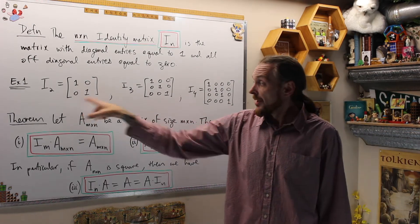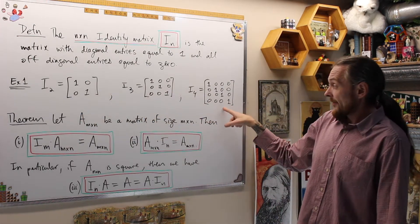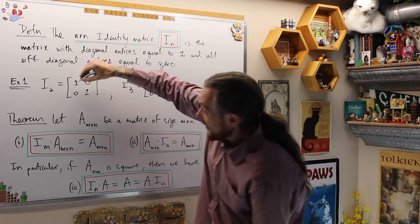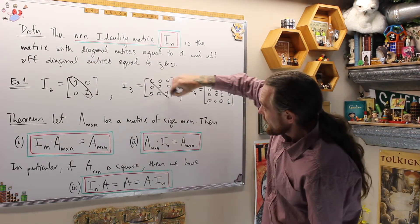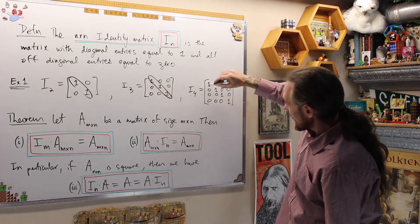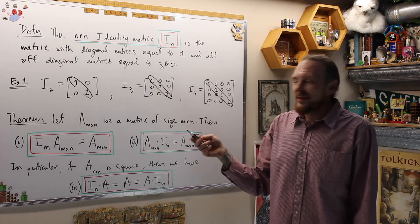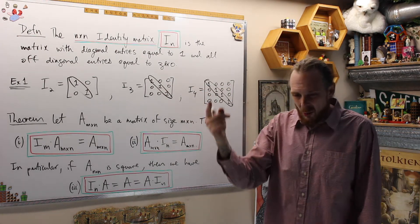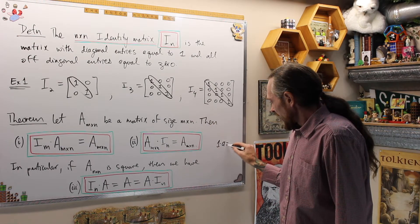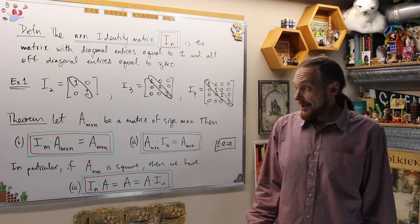Here's I2, here's I3, here's I4, and they're just going to get bigger and bigger. All of the diagonal entries are ones, and all of the off diagonal entries are zeros. Why do we want this? This is going to play the role of the number 1. When we multiply a real number by 1, it leaves everybody alone, and we want an analog to that.